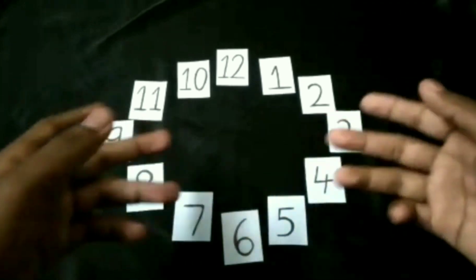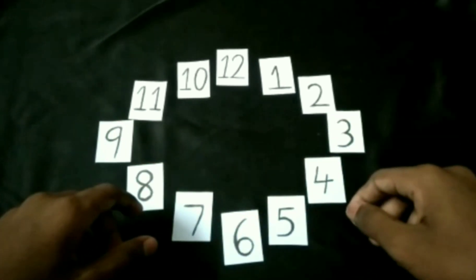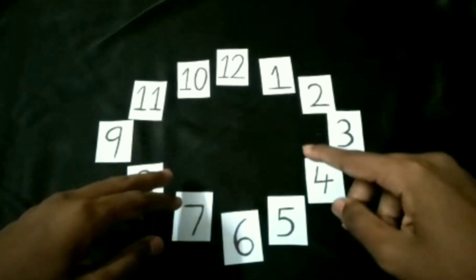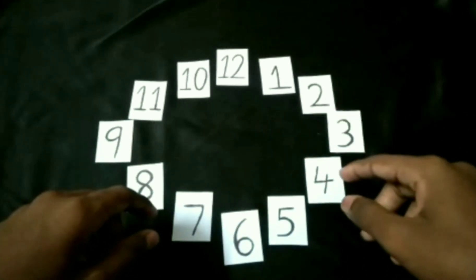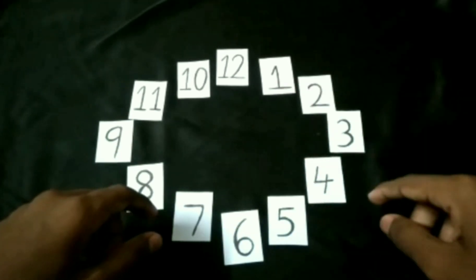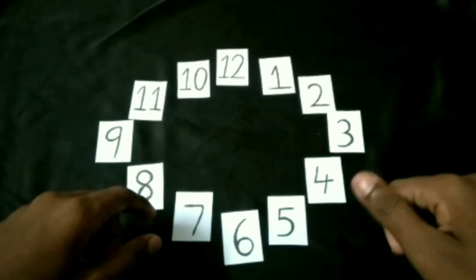Now keep your finger on the number 12 and then spell the number you are thinking of. You landed on a number. Place your finger on that number and continue around the clock. Keep going. Now keep your finger where you are right now.